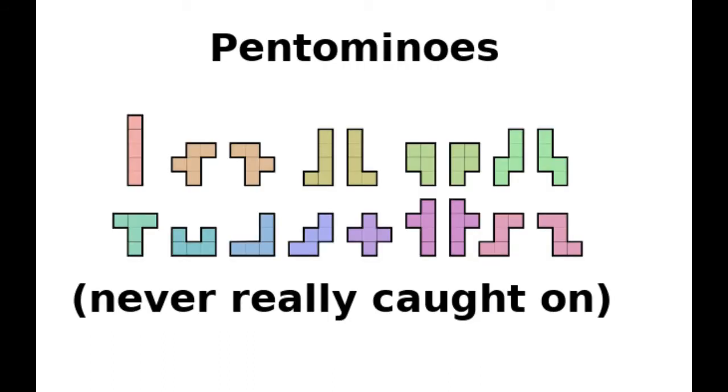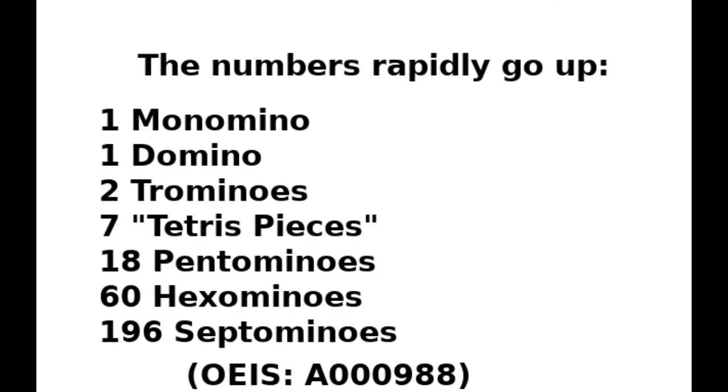The next step is the pentominoes. There are eighteen of them, and there have been attempts to use them in tetris-like games, although it never really caught on. Going on from there, the number of possible combinations rapidly increases. By the time we have seven tiles, we have 196 possible combinations, and by fifteen we have almost seven million. These numbers are listed in OEIS sequence A000988.